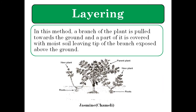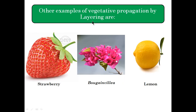Next is layering. Layering is done in plants having flexible stems. A branch of the plant is pulled towards the ground and buried in the soil, with the tip of the branch exposed above the ground. After few days, roots appear in the buried part and a shoot grows upwards. Later, the middle portion is cut, and from one parent plant, multiple new plants are produced. An example is jasmine or chameli. Other examples include strawberry, bougainvillea, and lemon.